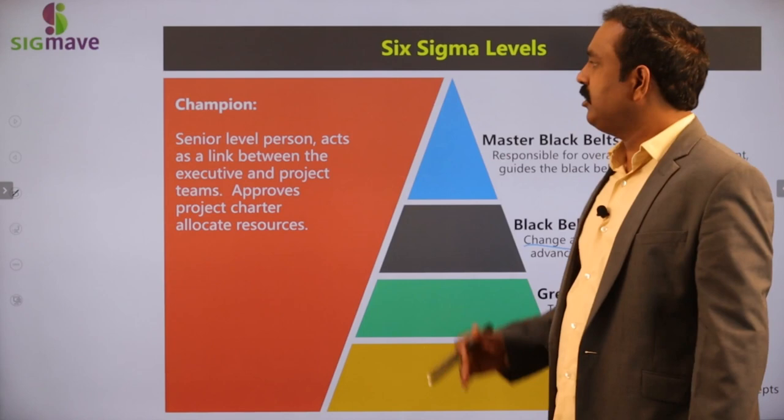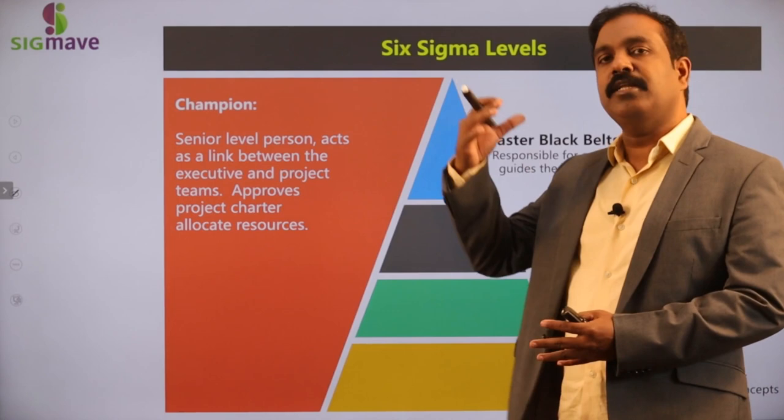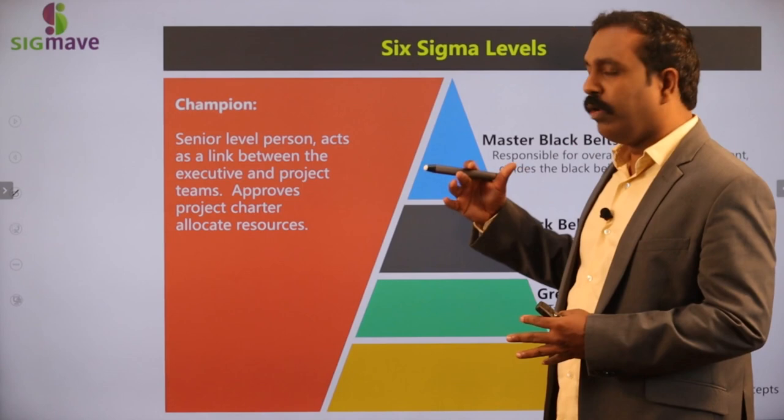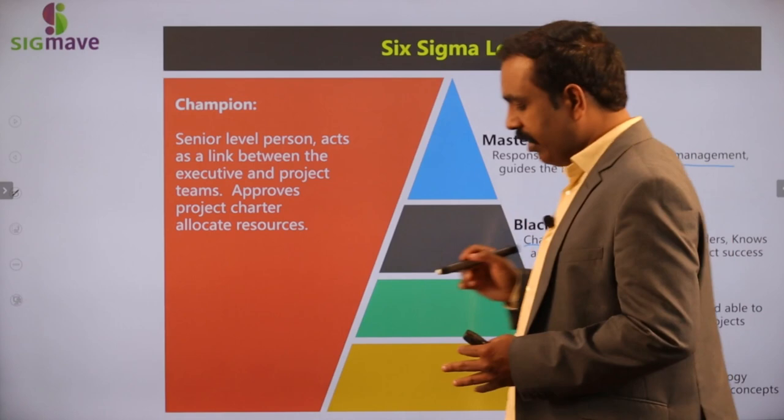The champion is a senior level person and acts as the link between the Six Sigma teams and the top management. He is the person who is going to allocate resources and approve the project charter. So he is a senior level person.